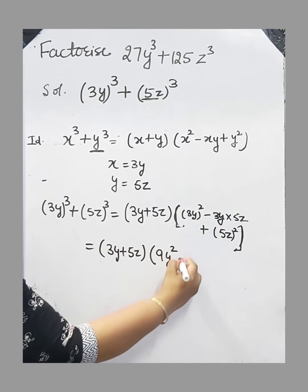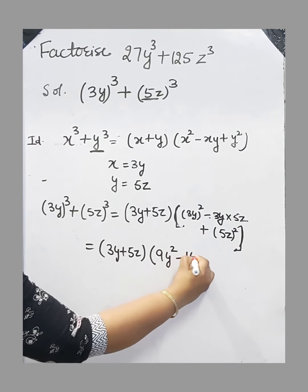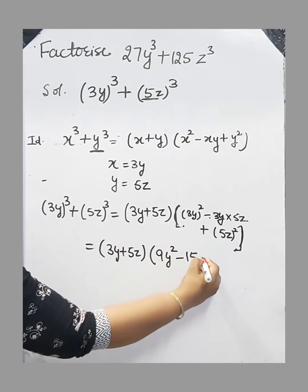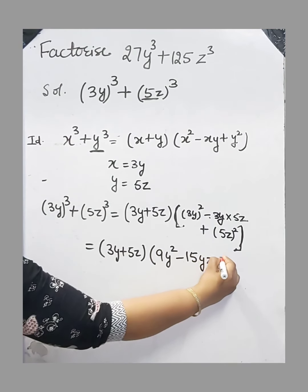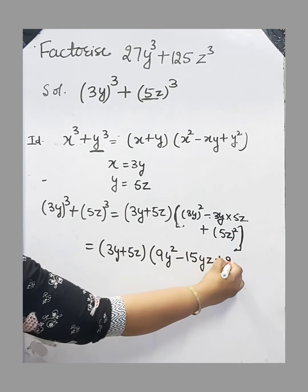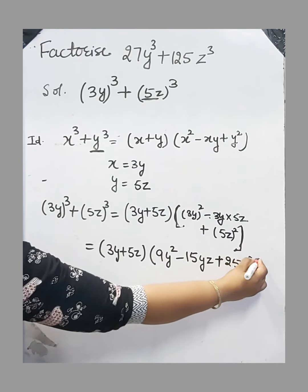3y times 5z: 3 times 5 is 15. Minus sign is here, therefore we write minus 15yz. Plus (5z)² equals 25z².